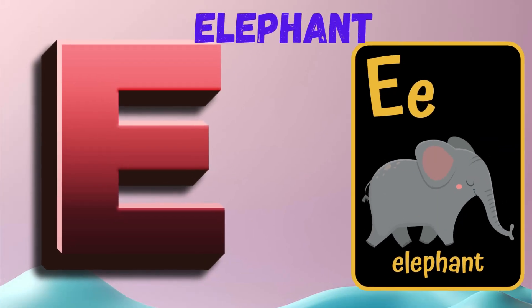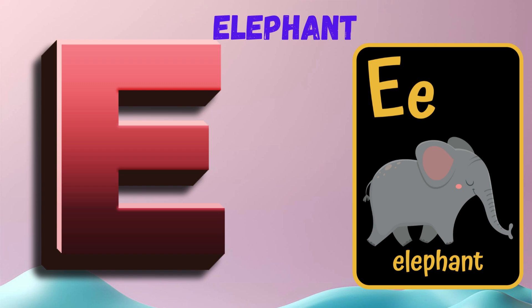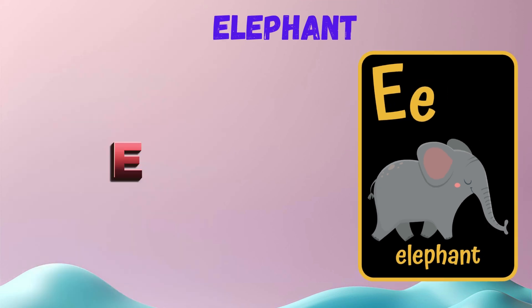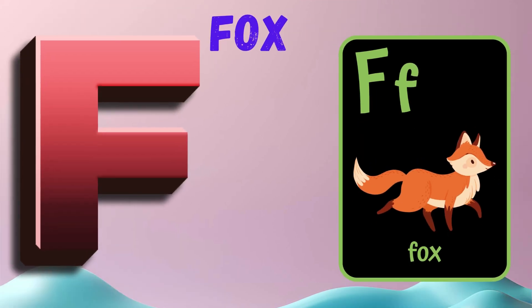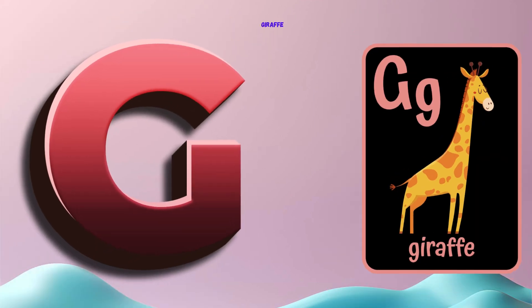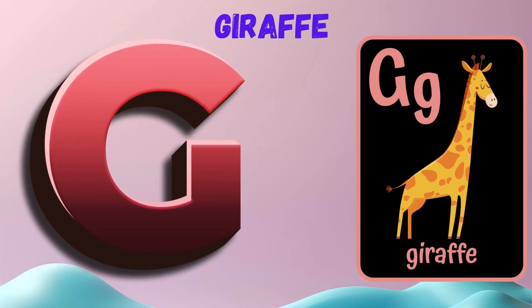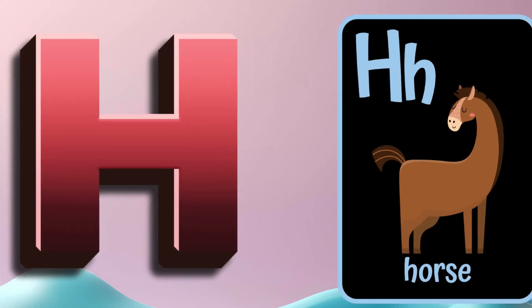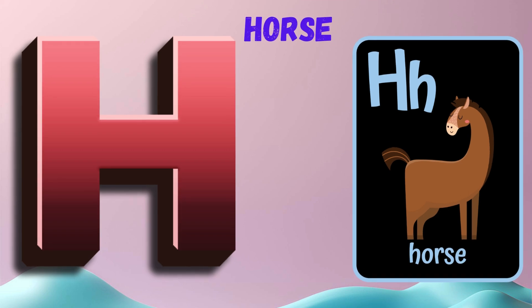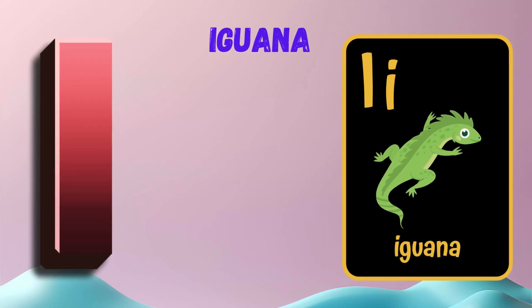E is for Elephant. E, E. Elephant. F is for Fox. F, F. Fox. G is for Giraffe. G, G. Giraffe. H is for Horse. H, H. Horse.